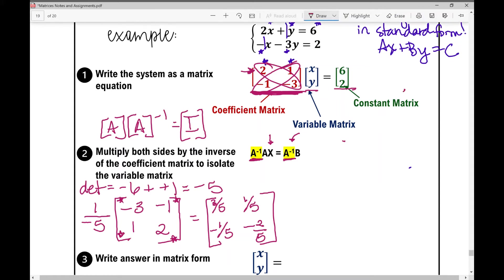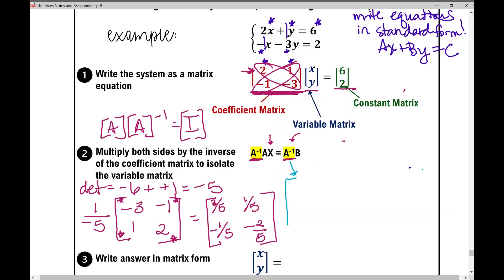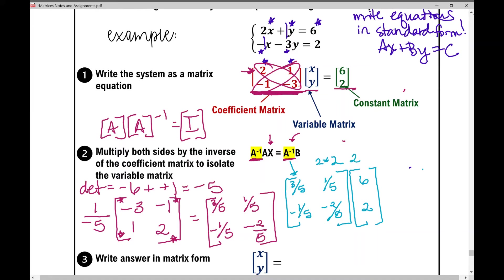So I'm going to write the inverse of matrix A — three-fifths, one-fifth, negative one-fifth, negative two-fifths — and multiply it by matrix B, which is six and two. I've got a two-by-two matrix multiplied by a two-by-one matrix. This is why order matters: you must multiply the inverse of matrix A times matrix B in that order, because a two-by-one times a two-by-two is not defined.